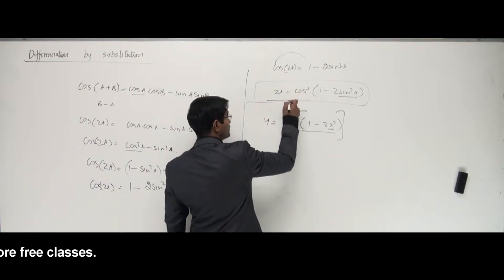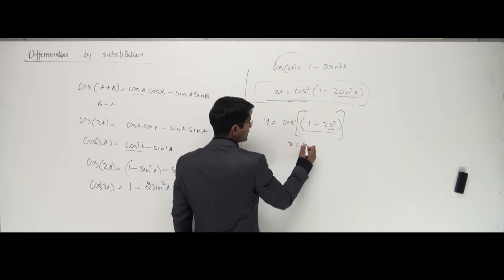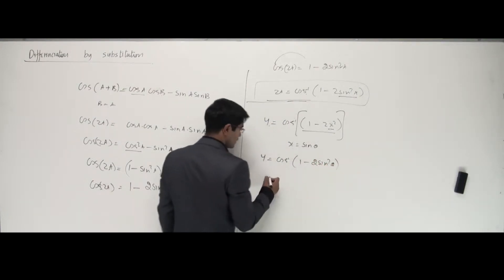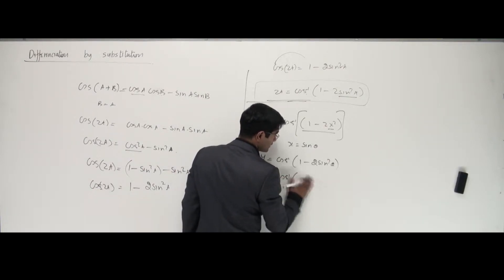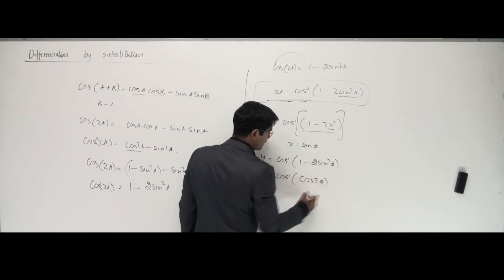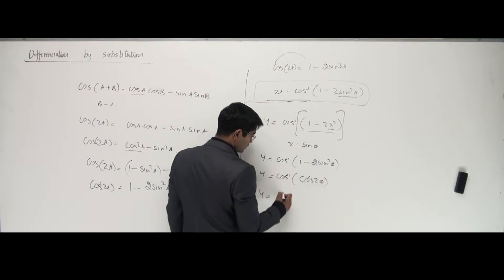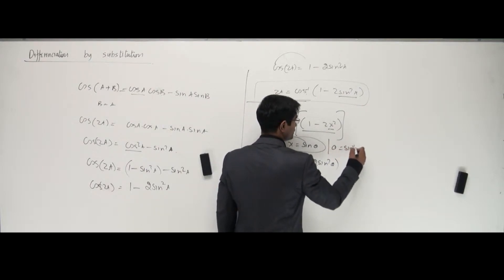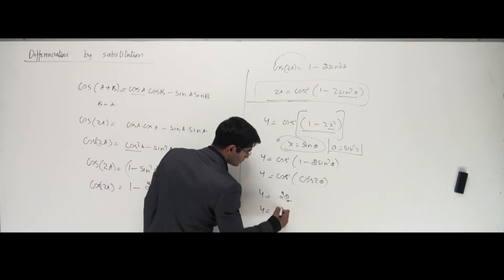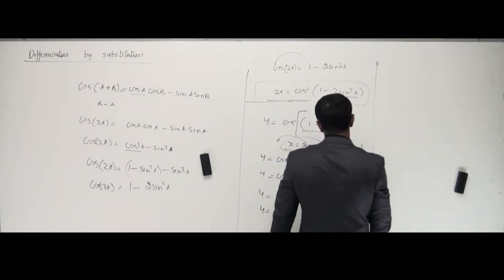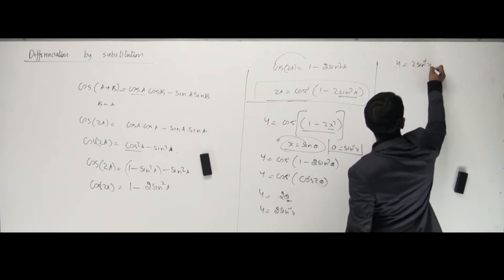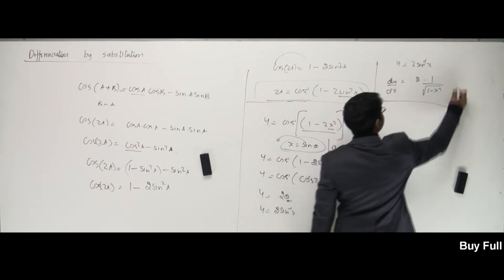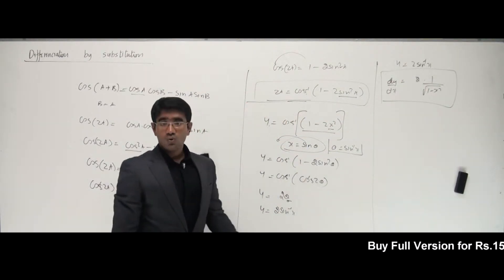So if I take x as sin theta, y equals cos inverse of 1 minus 2 sin squared theta, which by the formula is cos inverse of cos 2 theta. The cos and cos inverse cancel, giving y equals 2 theta. Since theta is sin inverse of x, y equals 2 sin inverse of x. Differentiating: dy/dx equals 2 times 1 over root of 1 minus x squared. That's the answer — just one single step of differentiation.